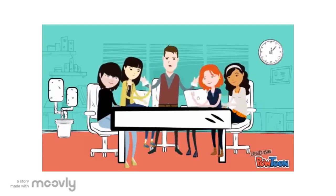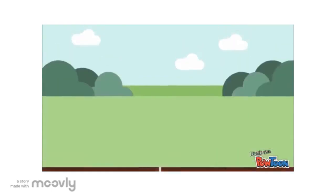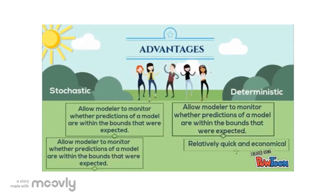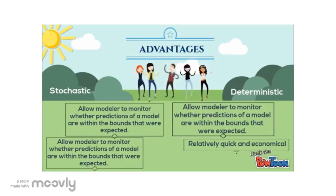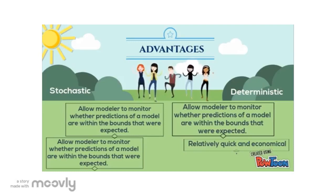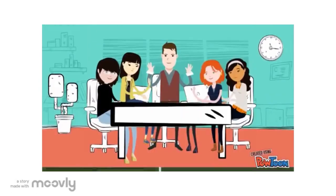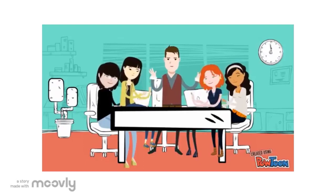Very good, both of you. Seems like you've done your reading on the matter. Now Islyn, tell me one advantage of both the models. If I am not mistaken, stochastic models enable modelers to monitor if predictions of a model are within the bounds that were expected. As for deterministic models, they are relatively quick and economical.